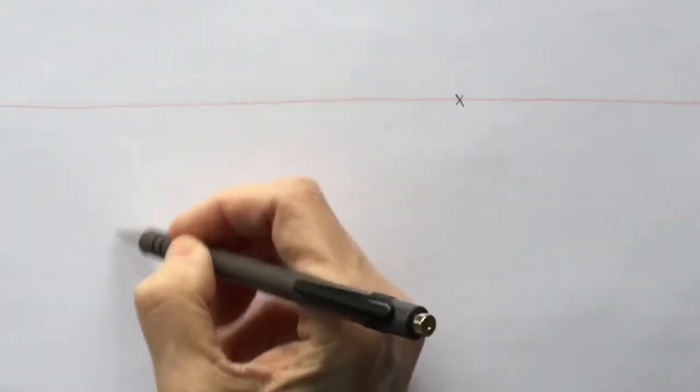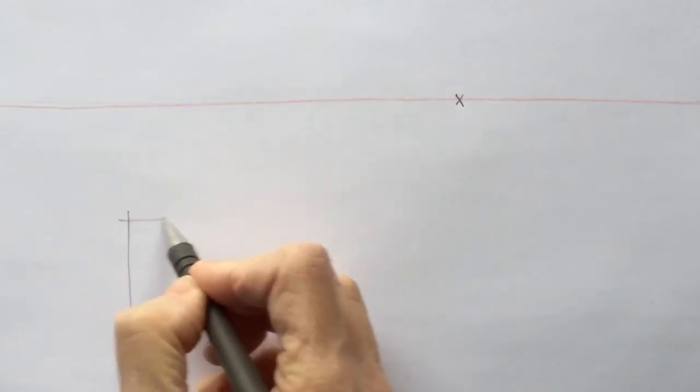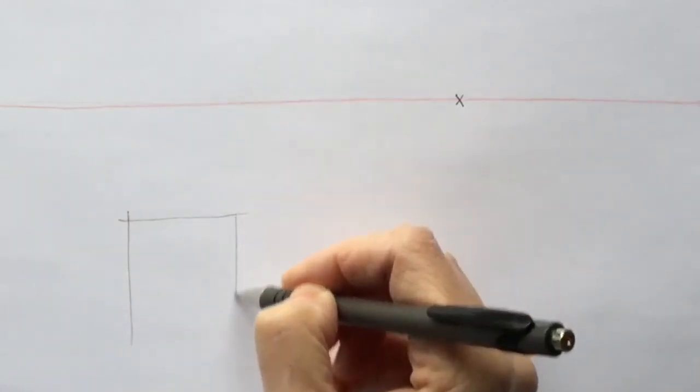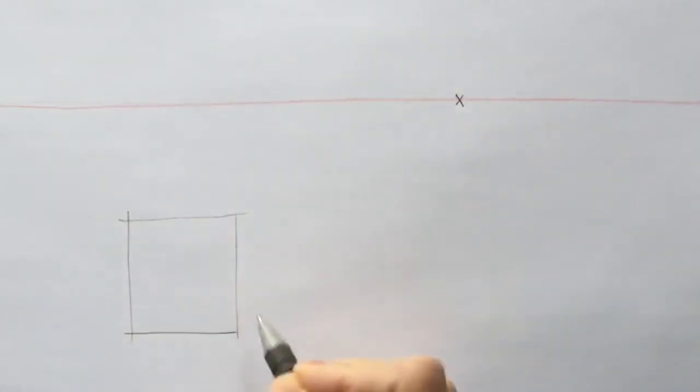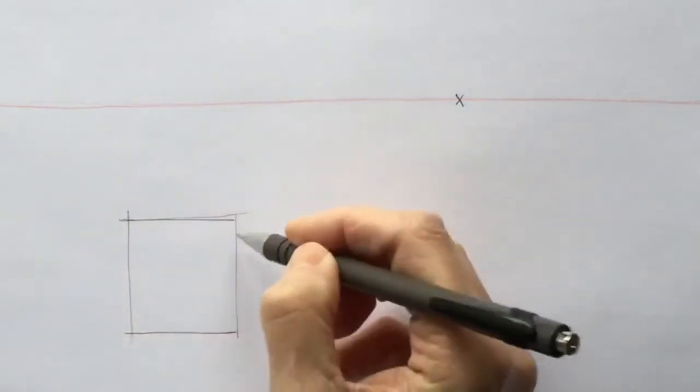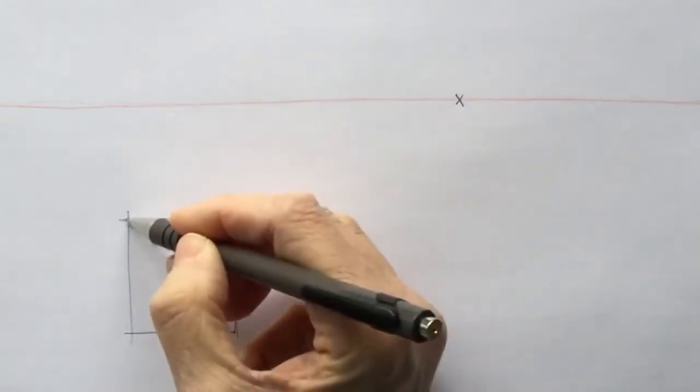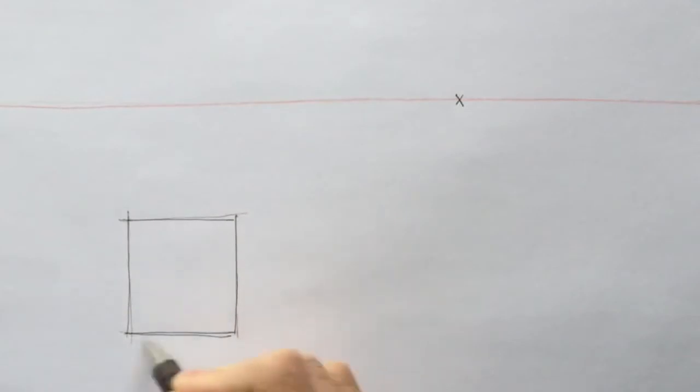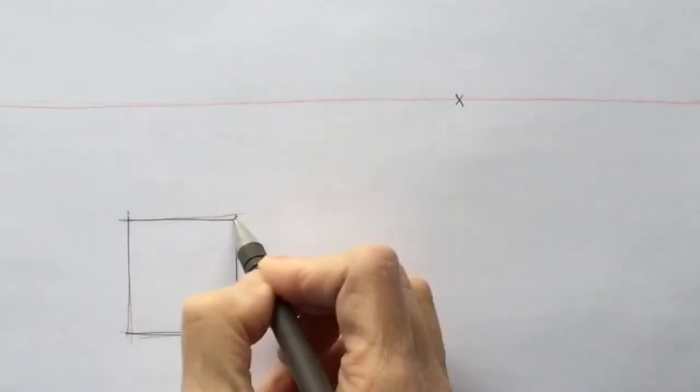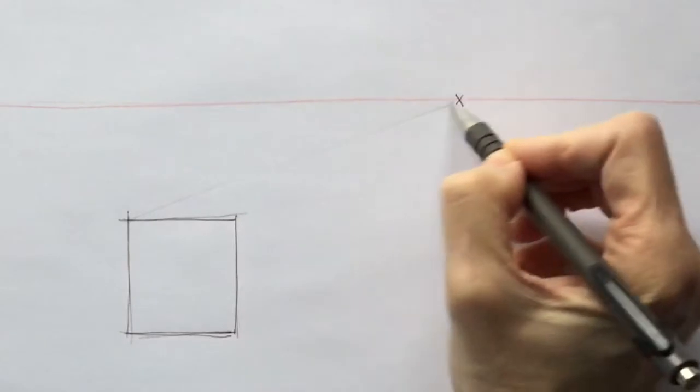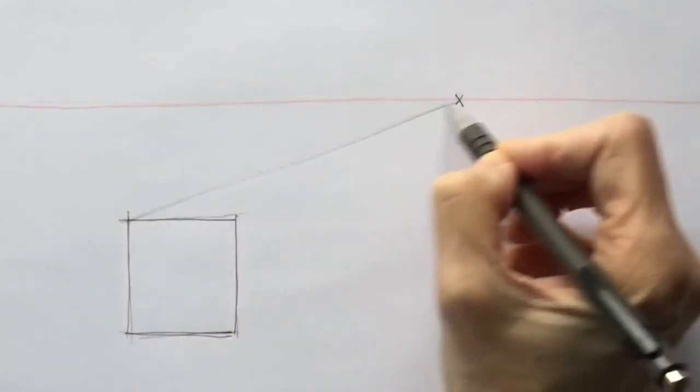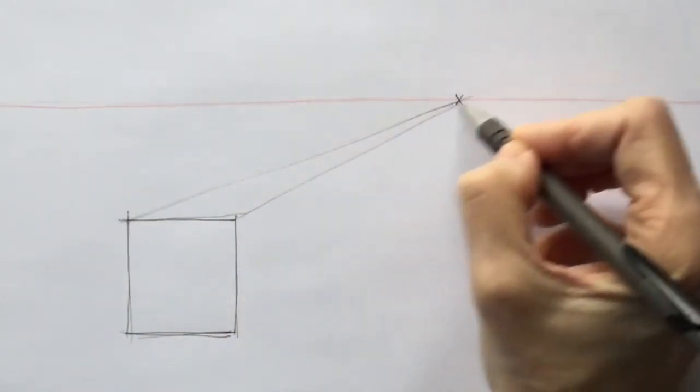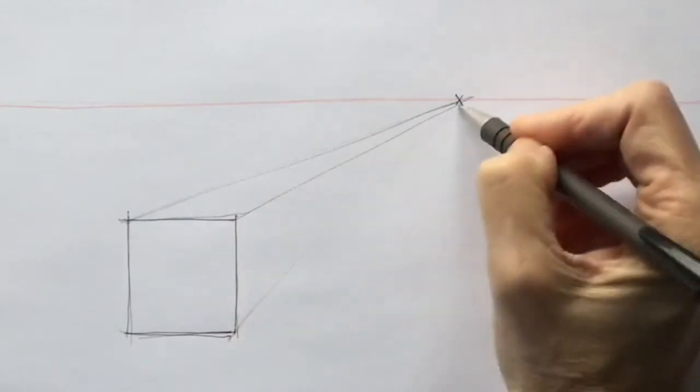And I'll begin with my one-point box. So you'll recall that we don't need to use any vanishing points for the front part of the box, or the back of the box really, because they're facing us squarely throughout their length and width. I do need the vanishing point though, when I want to know how much smaller to make the more distant view, the back of the box.